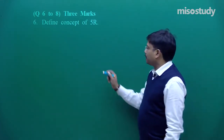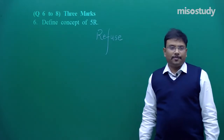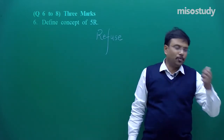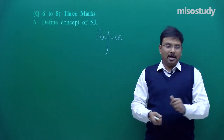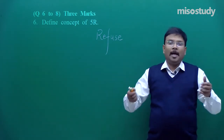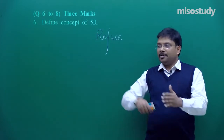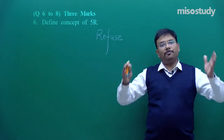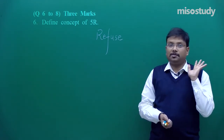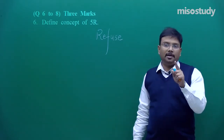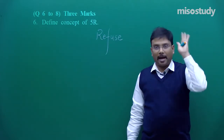What are those 5 R's? The first is Refuse. For example, I am going to the market to purchase fruits and vegetables. The vendor gives me a poly bag and says to keep all the apples, potatoes, bananas, and tomatoes in it. That is bad. Me and thousands of people moving with these poly bags — they are ultimately difficult for nature to adjust. So Refuse: anything which is bad for the environment, say no. Say no to poly bags, for example.